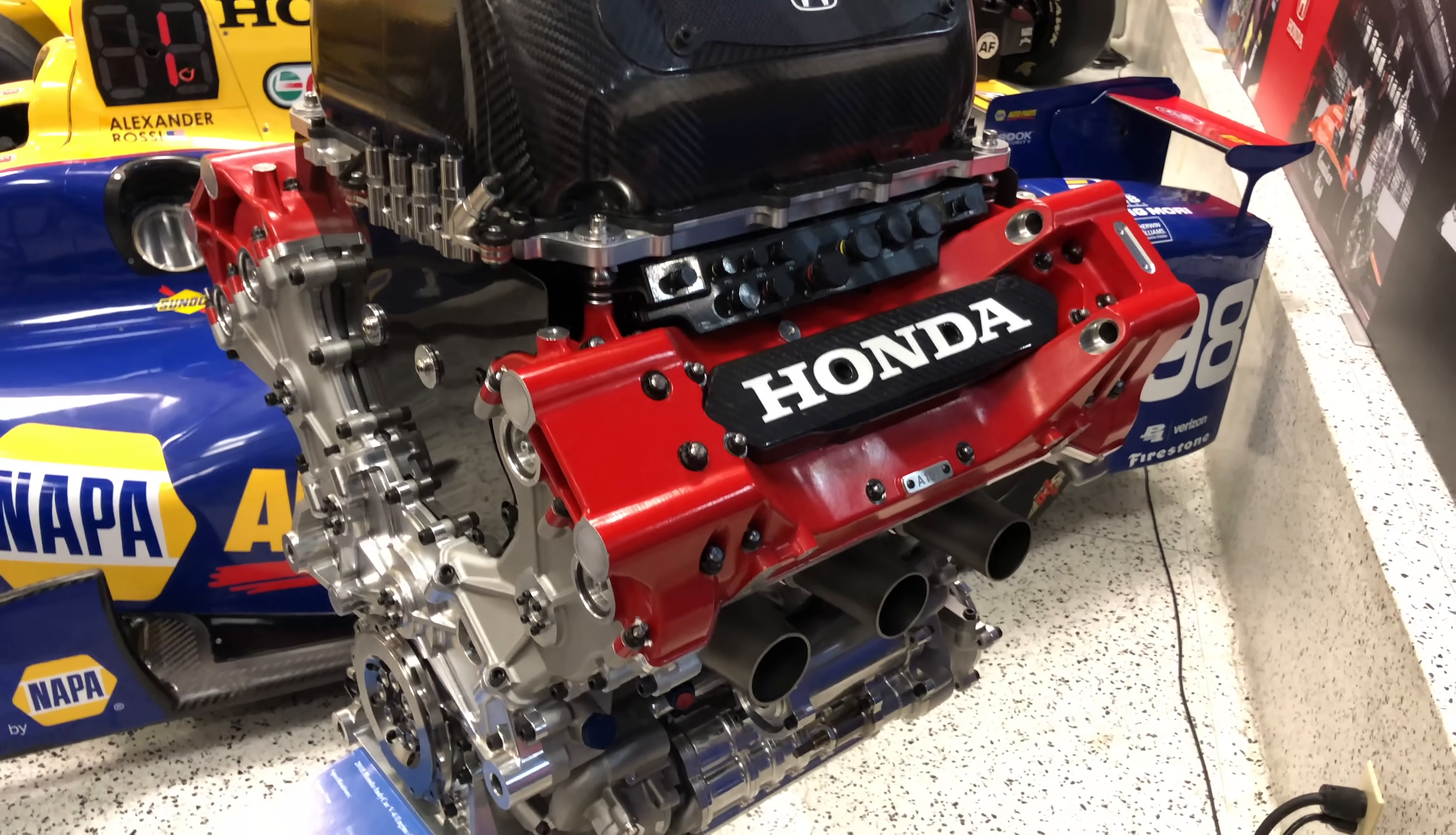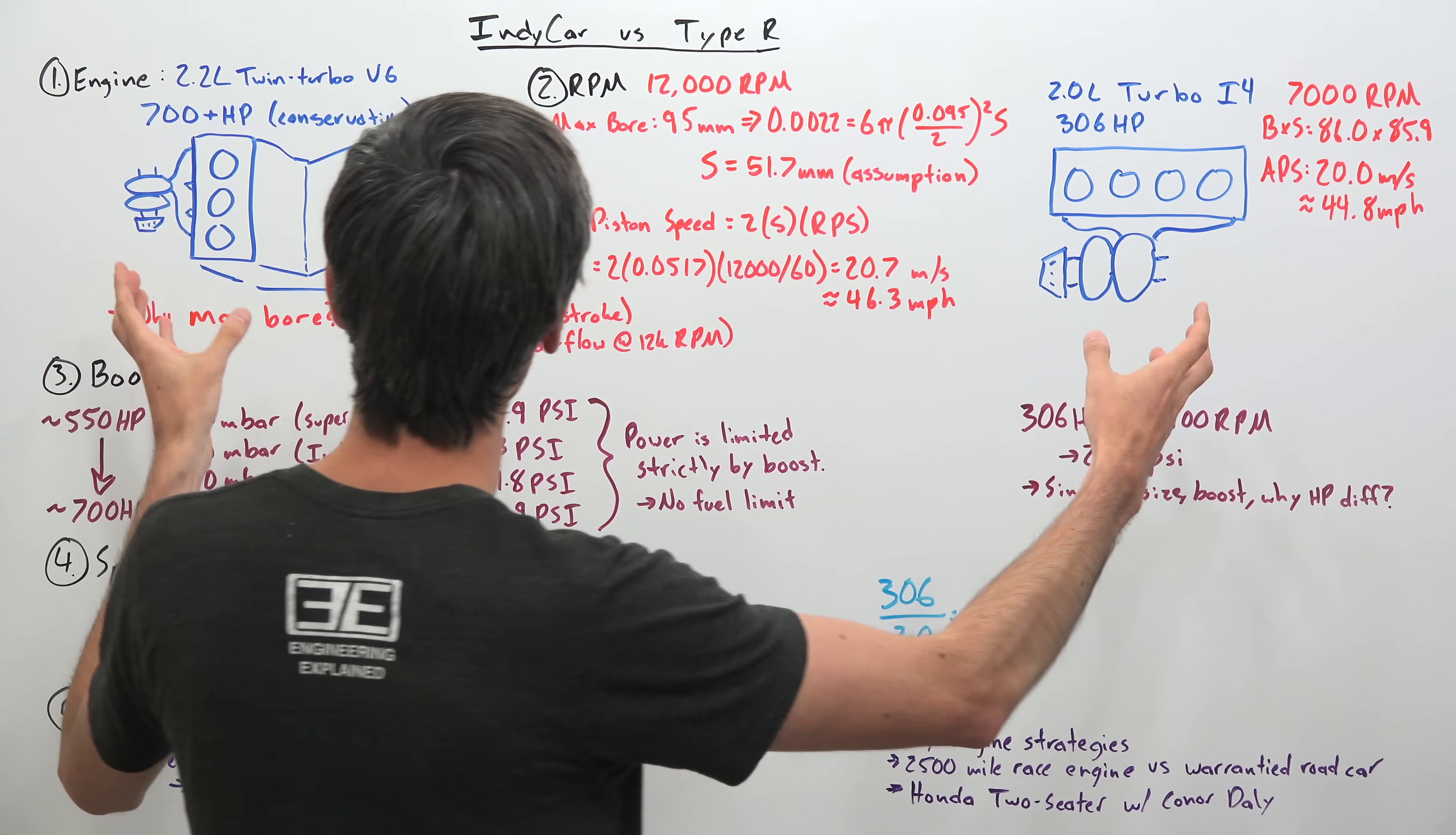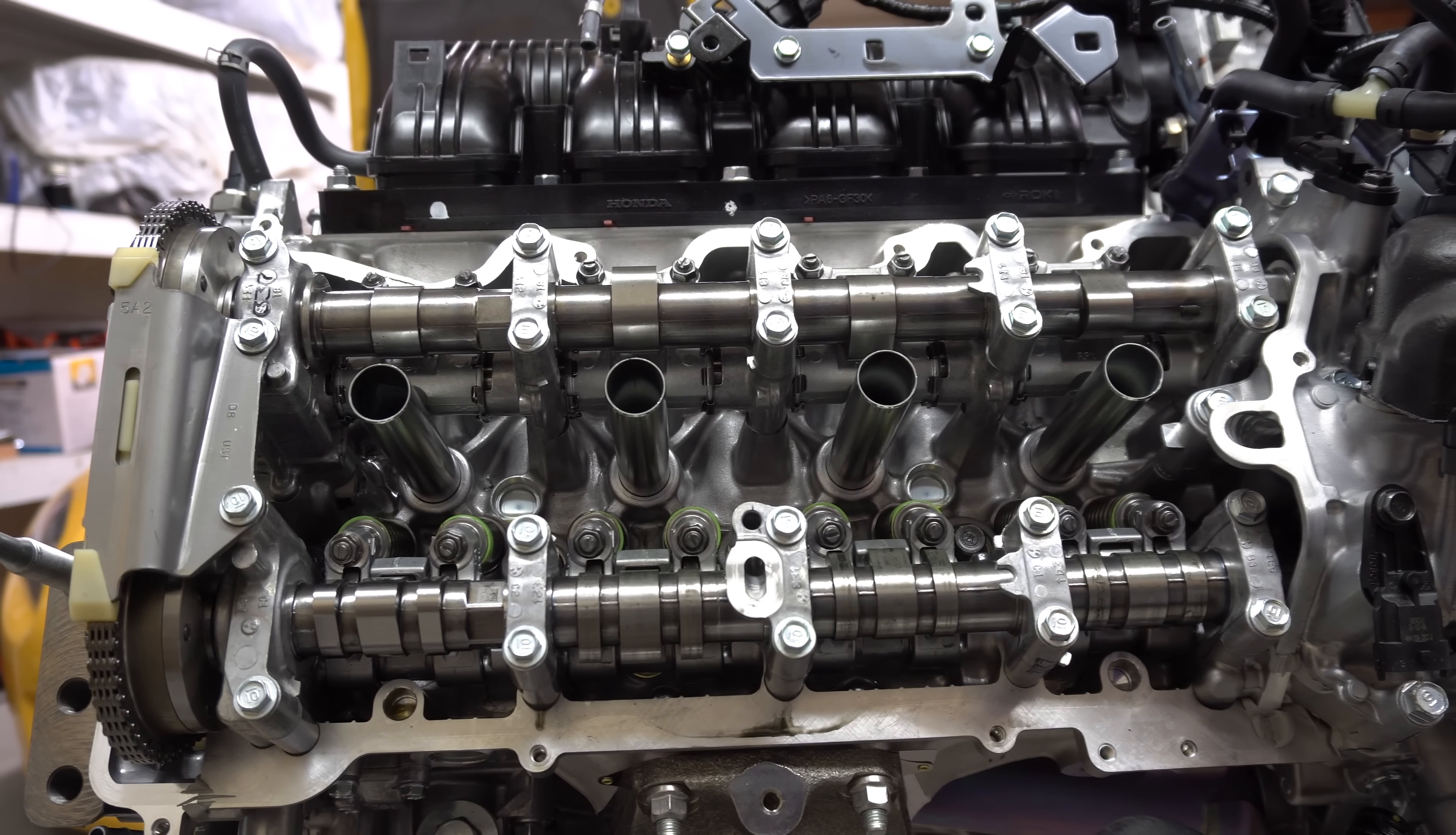So in this video we're actually going to be comparing this 2.2 liter engine used in IndyCar versus the Honda Civic Type R engine. And when you look at these engines, they're both similar size, they're both turbocharged, and yet the power differential between them is extraordinary. And so in this video we're going to break down why does that power difference exist, what are the different strategies that these engines are using, and actually some of the similarities that exist between these two engines.